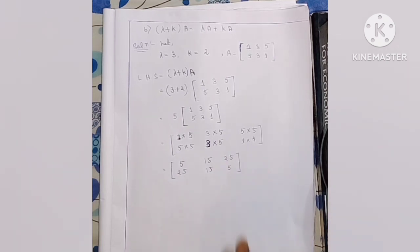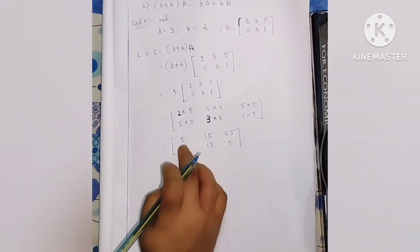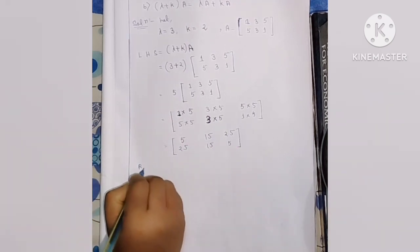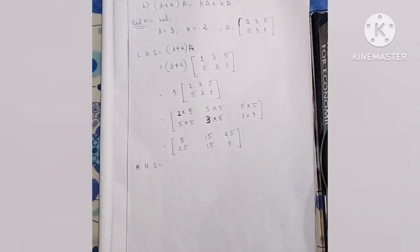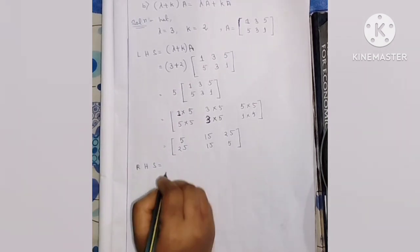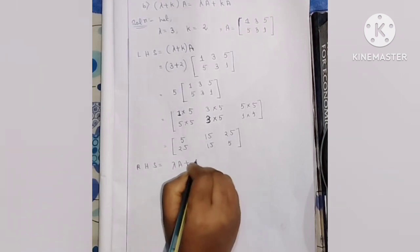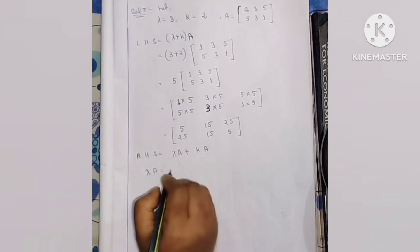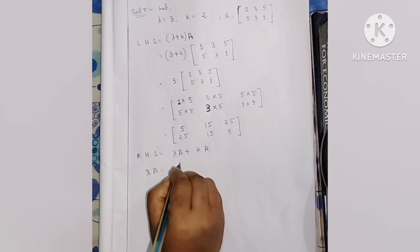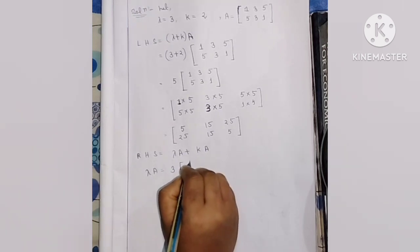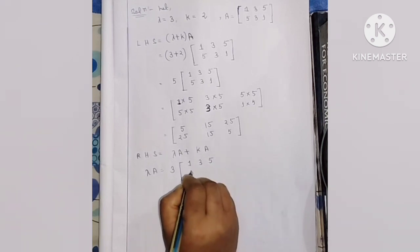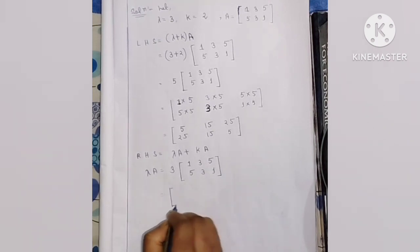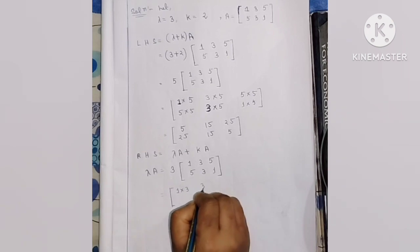The result: 5×1=5, 5×3=15, 5×5=25, 5×5=25, 5×3=15, 5×1=5. So the left-hand side matrix equals [5, 15, 25; 25, 15, 5]. We have the left-hand side result. Now we need to compute the right-hand side, which is lambda A plus k A.